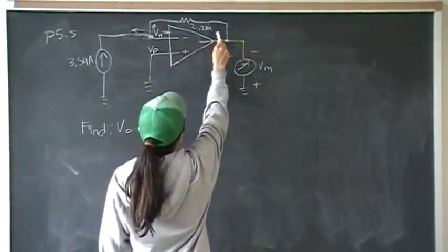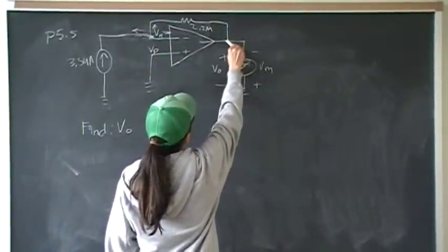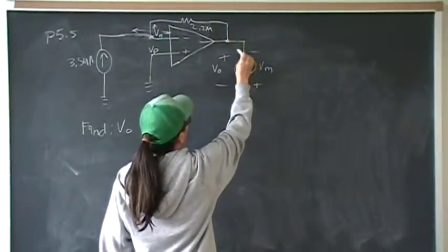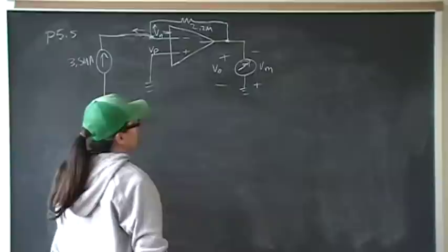The feedback resistance is 2.2 megaohms. We have a voltmeter, and they want to know what it will measure.